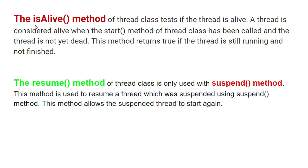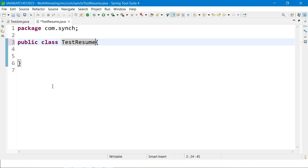In simple words: isAlive() checks if the current thread is in a running state — true if running, false otherwise. The suspend() method stops or suspends a particular thread, and if we need to start it again later, we use resume() to restart that thread. Let's do a practical example.